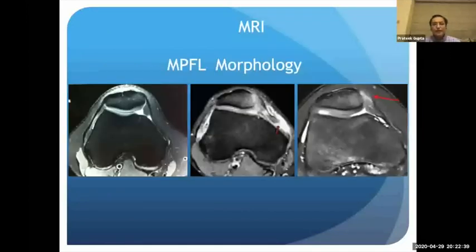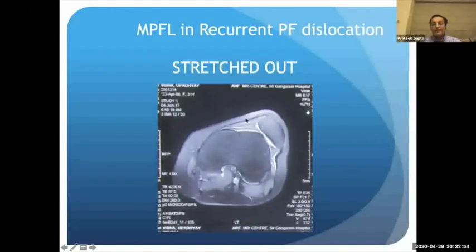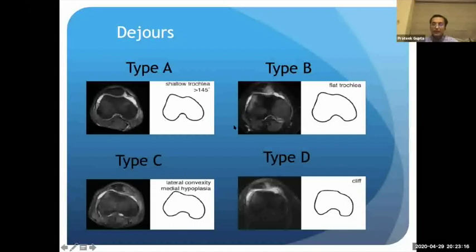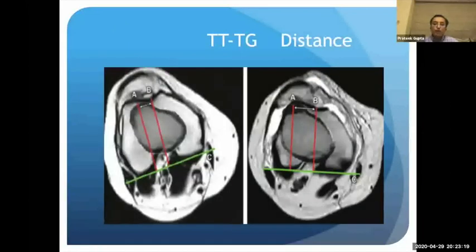MRI gives soft tissue information about the MPFL. The normal retinaculum can be compared with detachment from the femoral side or edema and injury on the patellar side. In chronically dislocated patellae, the MPFL can appear stretched out and dysfunctional. MRI also demonstrates trochlear dysplasia morphology with edema. For confirming tibial tubercle position, the TT-TG distance is measured: a perpendicular from the deepest point of the trochlear groove and another from the tibial tuberosity, both drawn to the posterior femoral condyle reference line.